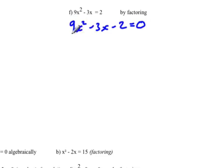And so if we're going to factor the trinomial on the left side, what we're looking for is two numbers that have a product of 9 times -2, which is -18, so the product has to be -18, and the sum has to be -3.